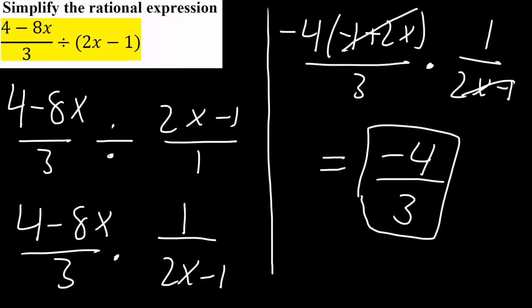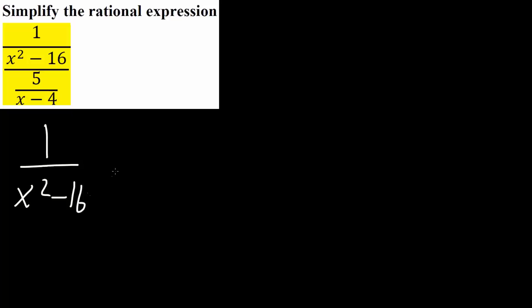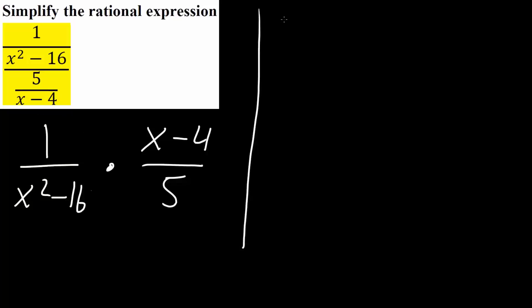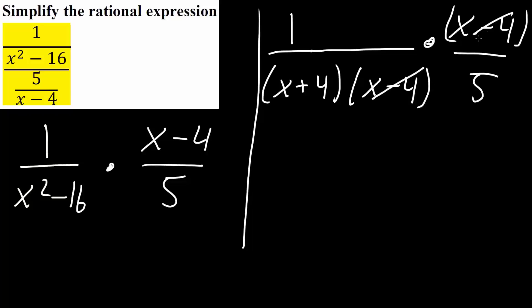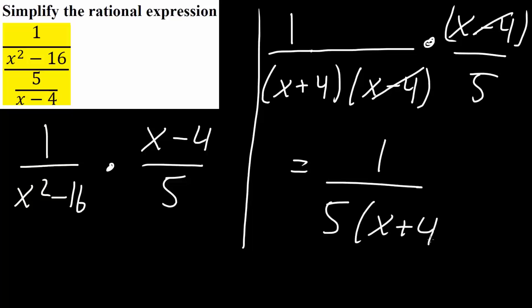Now we will do the third problem, which is actually a little bit different, but still very much the same. We can rewrite this by saying 1 divided by x squared minus 16, times x minus 4 divided by 5. The next step is to factor x squared minus 16, so we get 1 divided by (x plus 4)(x minus 4), times (x minus 4) divided by 5. We can cancel the x minus 4 terms. Our final answer would be 1 divided by 5(x plus 4).